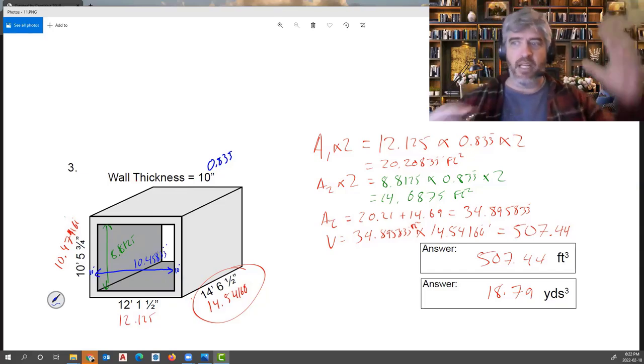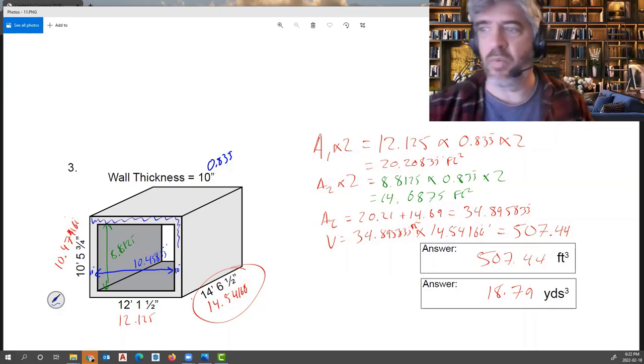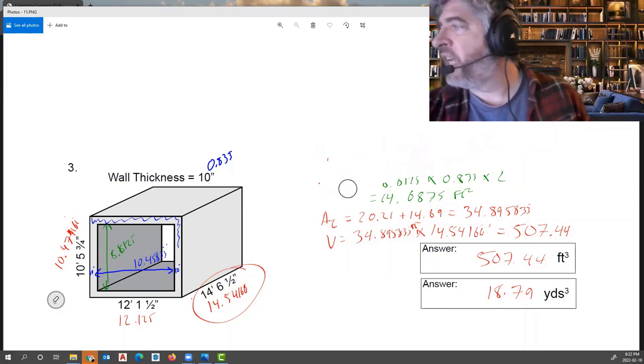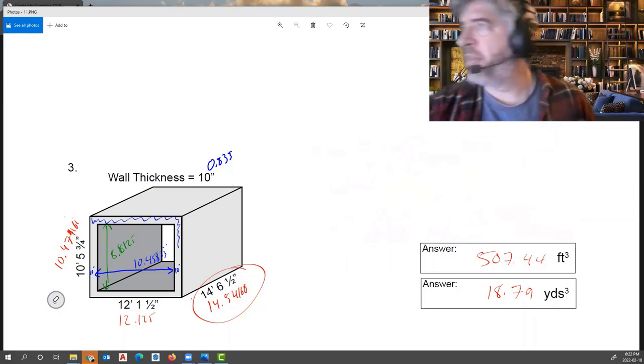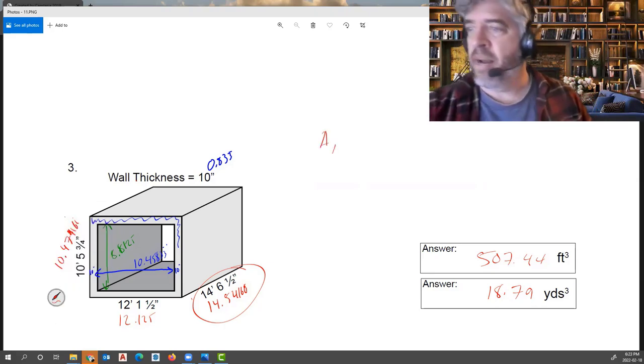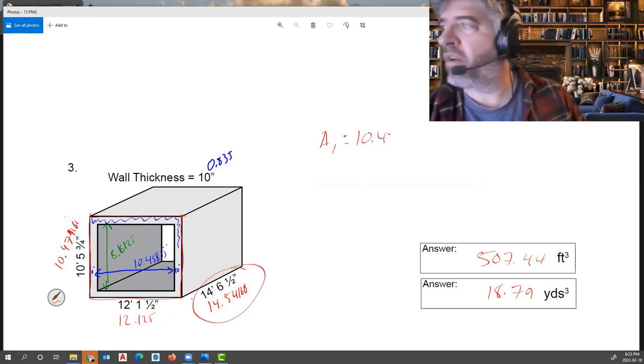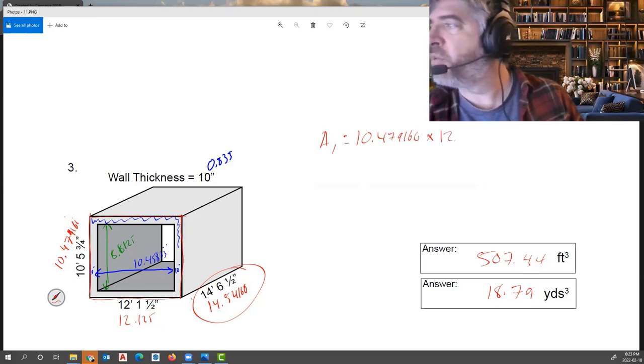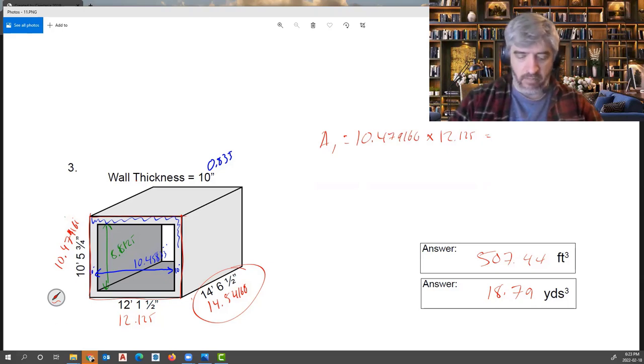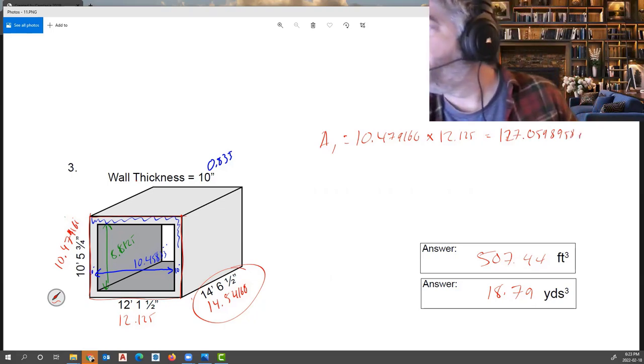So I'm going to find the area of the outside box and then subtract the area of the inside box, which will leave me with the area of this section here, which is what I want. I'm going to leave the answers in the answer box just to see if we can duplicate that answer many times over, which I'm confident we will be able to do. So first thing here, I'm going to find the area of the big one, which would simply be 10.479166 times 12.125, which equals 127.0598958, and that is square feet.